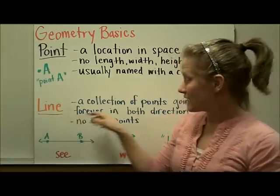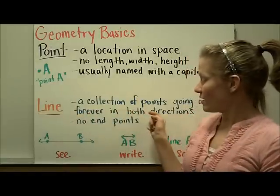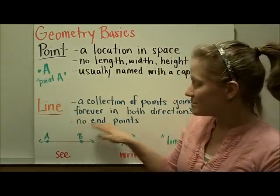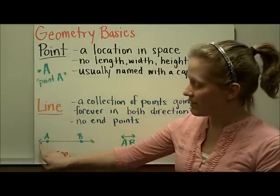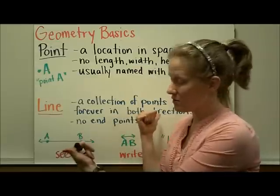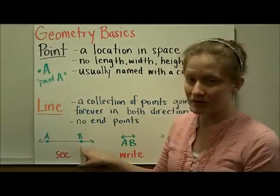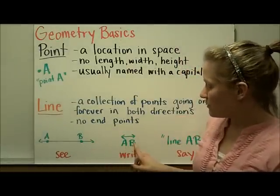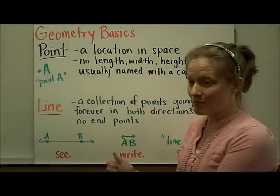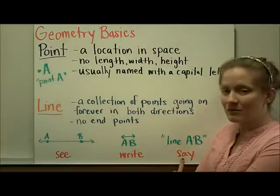A line is a collection of points going on forever in both directions. It's very important that you know that it goes on infinitely in both directions — there are no endpoints to this line. We show that it's going on forever by putting arrows on both sides. We name it by marking two points on the line and writing it with capital letters and arrows on both sides. We would read this as line AB.